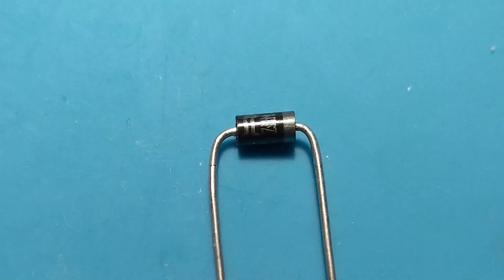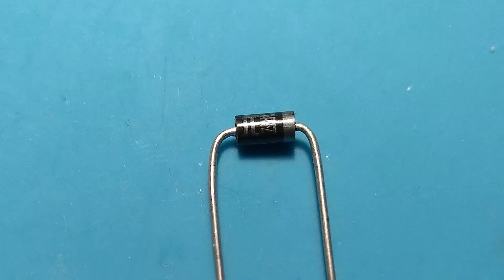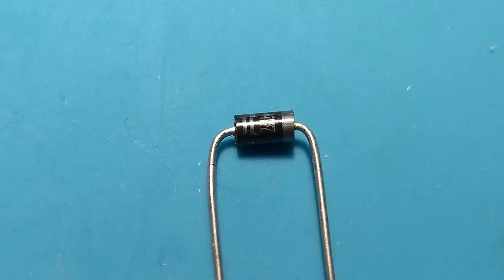But first, we need to know that a rectifier diode is a semiconductor that allows electric current to pass in one direction.